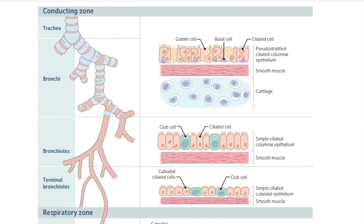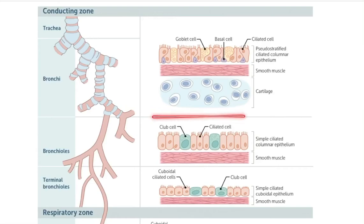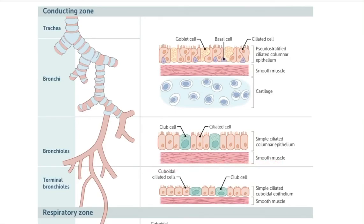The conducting zone starts from the trachea, bronchi, bronchioles, and terminal bronchioles. Histologically, goblet cells and cartilage are present to the end of the bronchi. Smooth muscle extends to the end of the terminal bronchioles, while the pseudostratified columnar epithelium ends at the beginning of the terminal bronchioles.